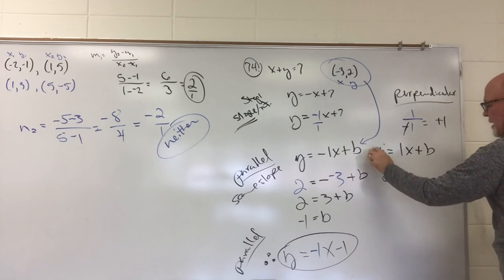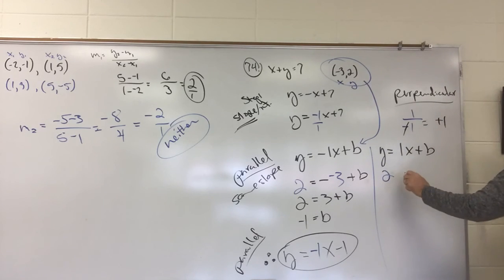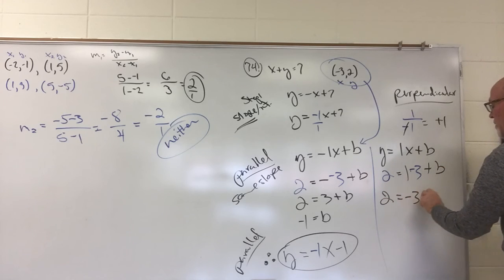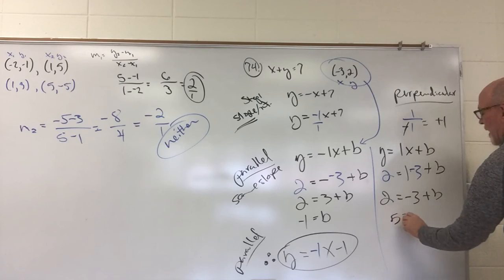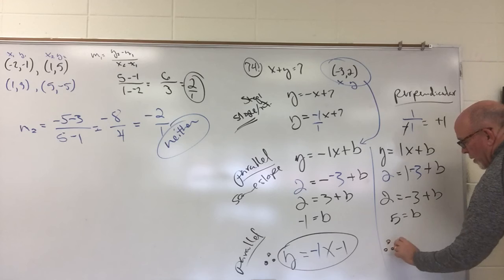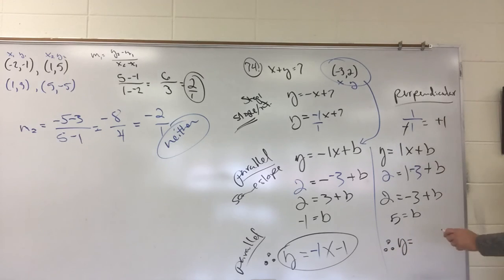So, we're going to plug in 2 for y equals a positive 1 times a negative 3 for x plus b. I get a 2 equals a negative 3 plus b. And, when I add 3 to both sides, I get 5 equals b. Therefore, y equals, my new slope is positive 1 this time, positive 1x plus 5.